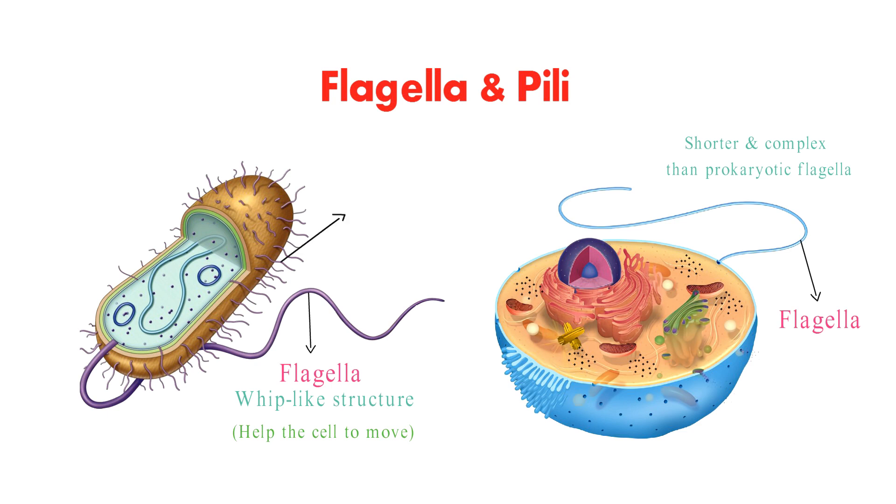Prokaryotic cells may have pili, which are short, hair-like structures that help the cell attach to other cells or surfaces. Eukaryotic cells do not have pili.